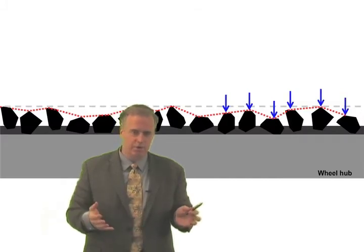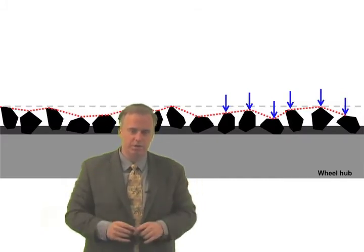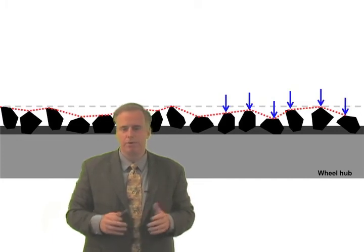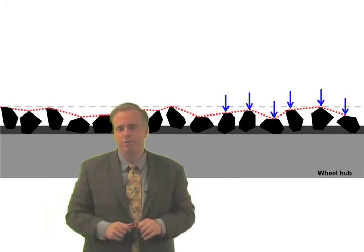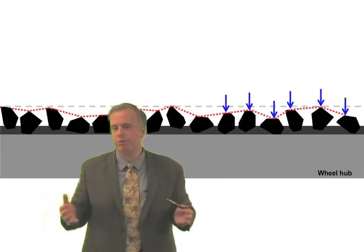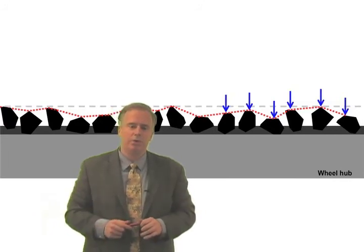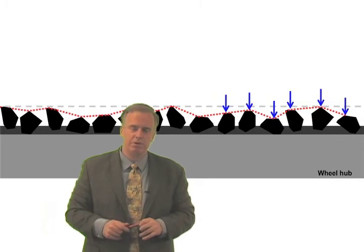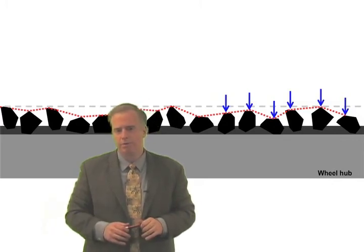Then as those grits fall away, more grits that are below there start getting into the action, and when those grits get in the action, we have what's called an increase in the cutting point density. More grits in the action mean a smoother surface finish, and now we've got more of a stable regime in terms of surface finish.